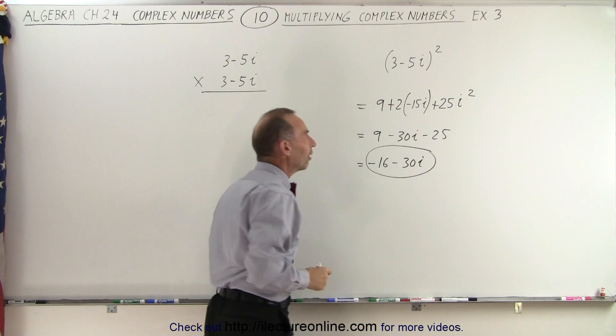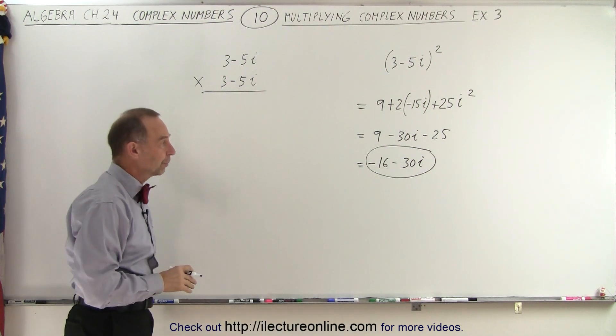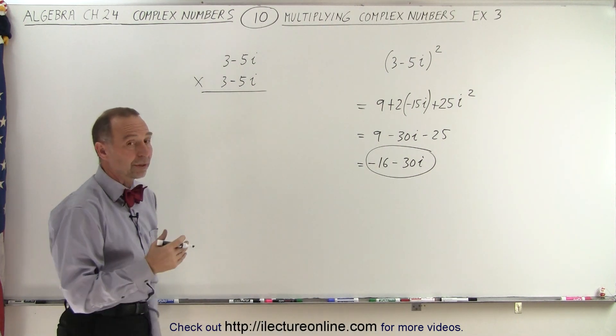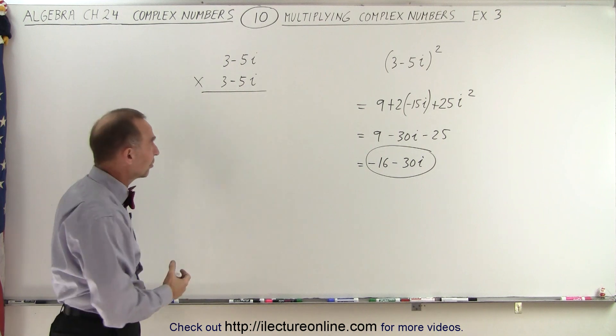And that would be the final result of squaring that complex number. Notice when we square a complex number, we still get a complex number.